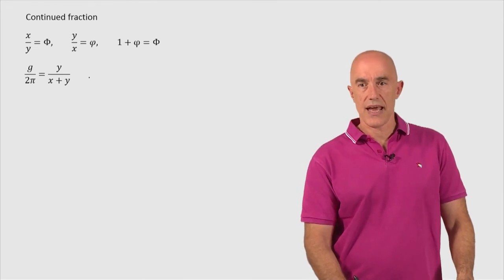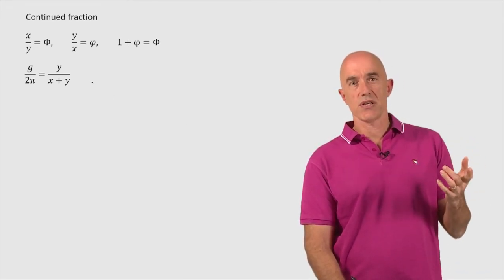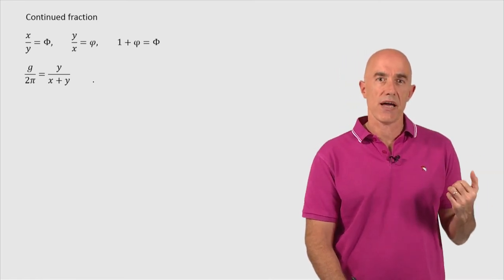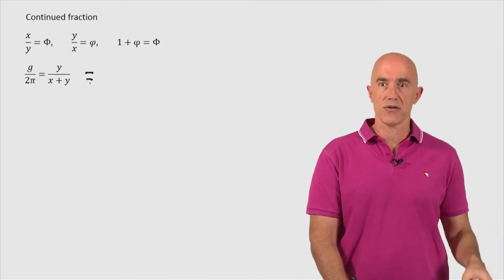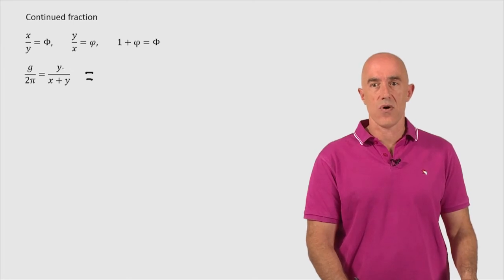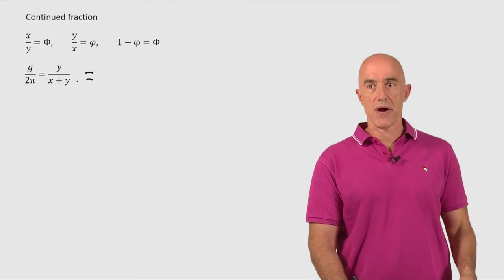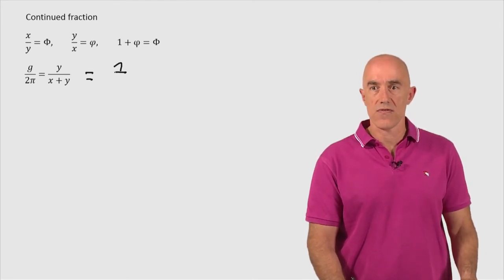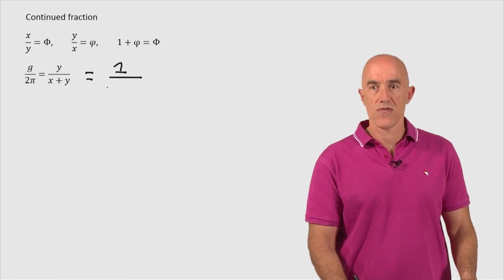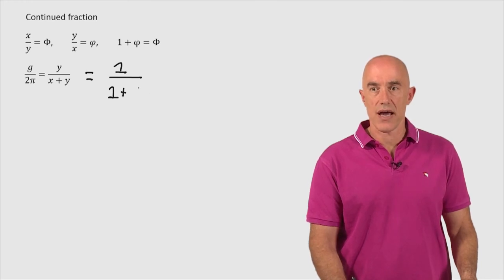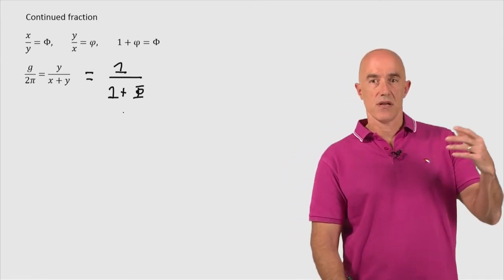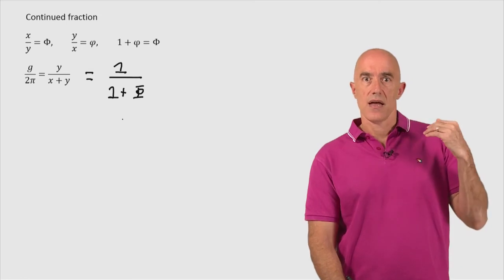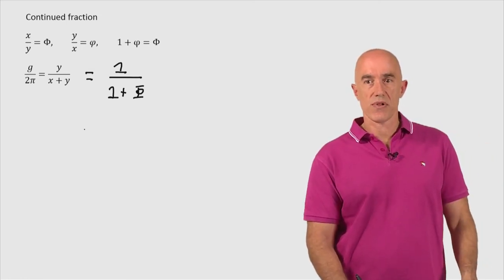So here's our golden angle. We know the continued fraction for the golden ratio, for phi. So it's better if we then convert this formula into a formula for the golden ratio. The golden ratio is x over y. So if we divide numerator and denominator here by y, we get 1 over y over y equals y over y from the second term, which is 1 plus x over y. x over y is our golden ratio, capital Phi. So this gives us g over 2π in terms of the golden ratio, 1 over 1 plus Phi.